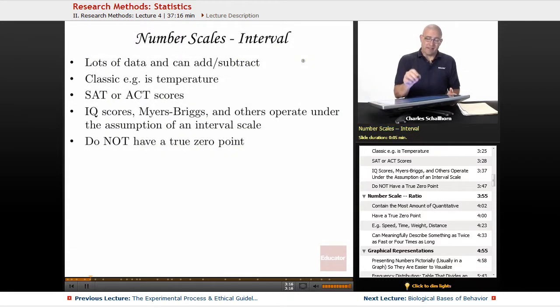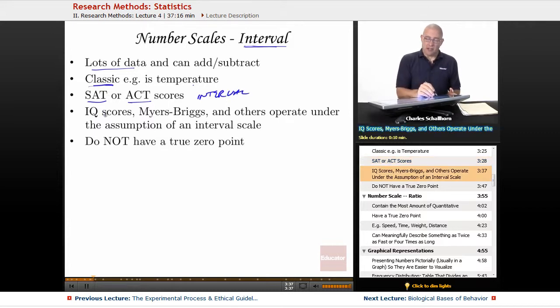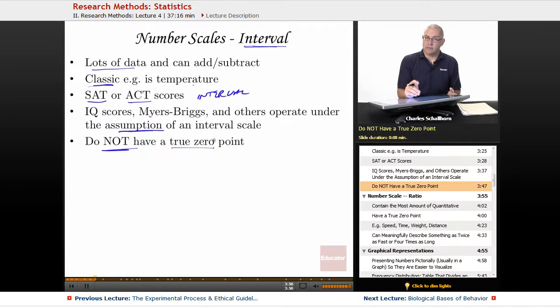Number scales. Again, we have now interval. There's lots of data that we can add and subtract. We can do something mathematically with interval scales. The classic example of an interval scale is going to be temperature. SAT scores, ACT scores, these are all interval scales that we can use. Now, things like the IQ scores, the Myers-Briggs, and others operate under the assumption of an interval scale. But with an interval scale, although we can do mathematics with them, there is no true zero point. And that's going to be a distinction between the interval and the next one.